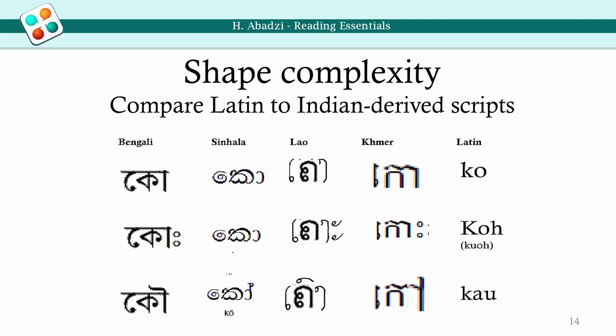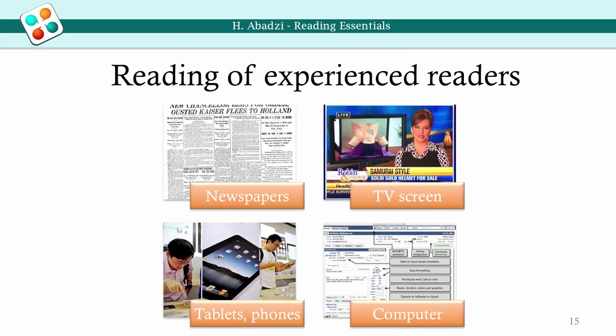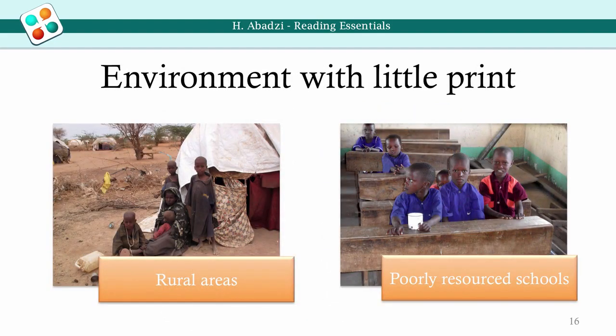Here are some East Asian characters derived from Indian scripts. Our brains prefer a certain separation among objects, and that preference also includes letters. When letters are dense, reading slows down. With practice, people get habituated to dense and small letters, so an experienced reader easily reads tiny and dense script. However, lack of practice delays habituation. Therefore, texts easily read by middle-class children may be too dense for the poor, who get few books.